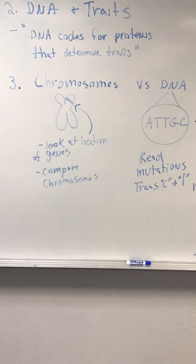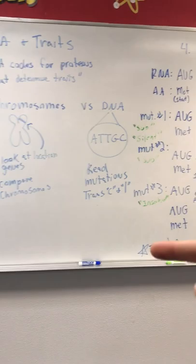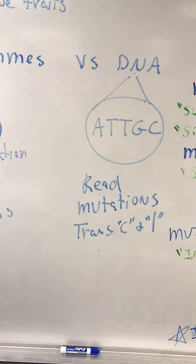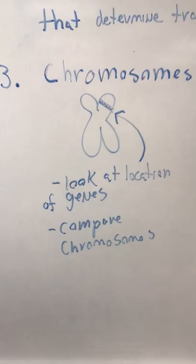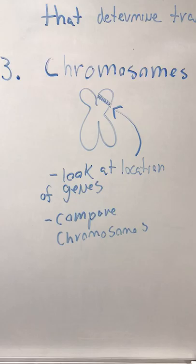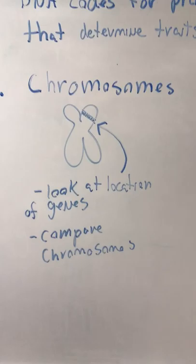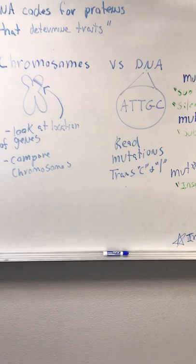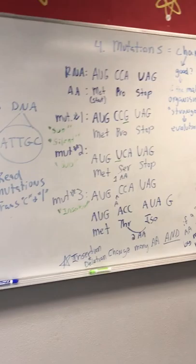Another important distinction is chromosomes versus a DNA sequence, going back to chromatin versus chromosomes. When DNA is loose, you can read it, identify mutations, transcribe it to RNA, and translate it. When it's tightly packed into chromosomes, you can't read it. With chromosomes, you can see gene locations, compare chromosomes, and compare genes — but you can't read the sequence.